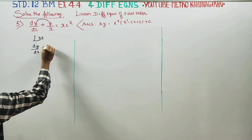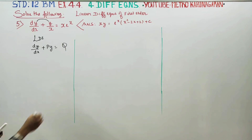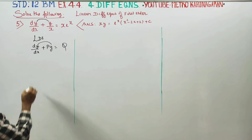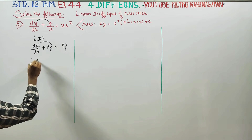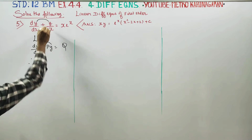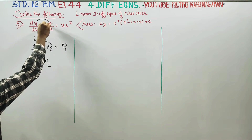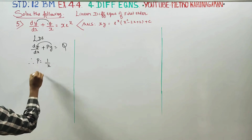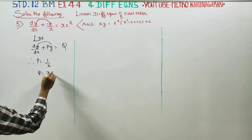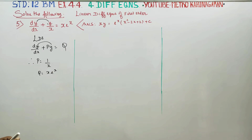The standard form of a linear differential equation is dy/dx plus Py equals Q. For sum number 5, P equals 1/x and Q equals e^x over x.